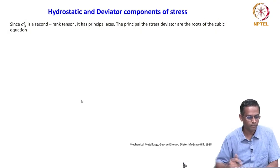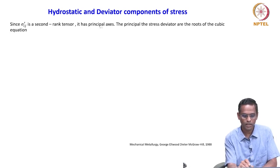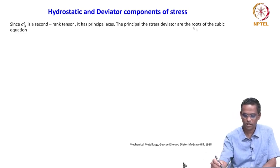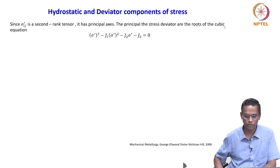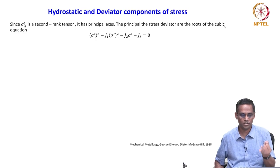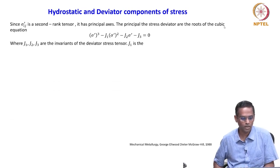Since sigma ij prime is a second rank tensor, which we have already stated, it has a principal axis. The principal stress deviators are the roots of the cubic equation — this also we know. We have looked at stress and then strain, and now it is the stress deviator, because these are all tensorial quantities.